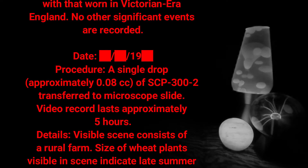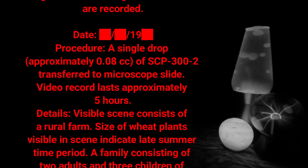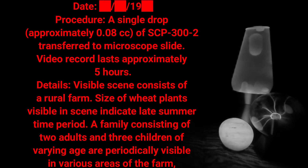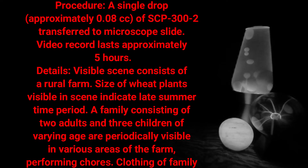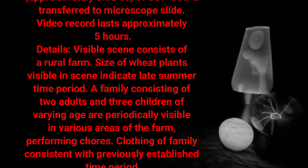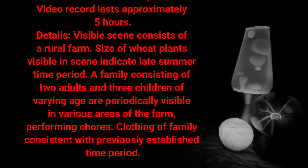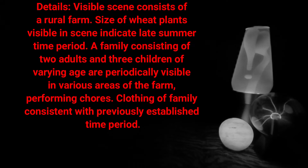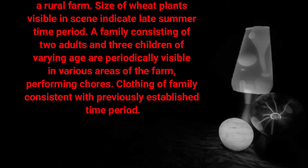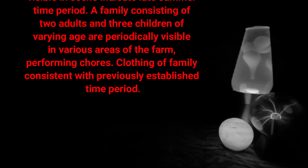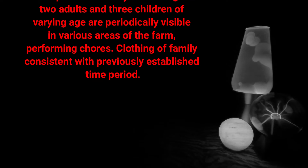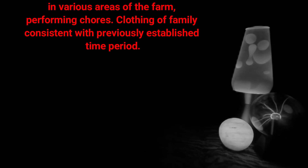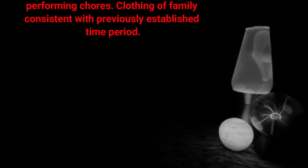Experiment Log — Procedure: A single drop, approximately 0.08 cc of SCP-300-2, transferred to microscope slide. Video record lasts approximately five hours. Details: The visible scene consists of a rural farm. Size of wheat plants indicates late summertime period. A family consisting of two adults and three children of varying ages are periodically visible in various areas of the farm performing chores. Clothing of the family is consistent with the previously established time period.